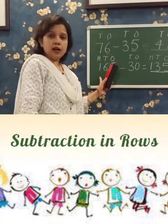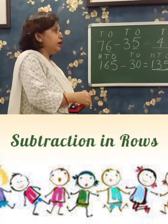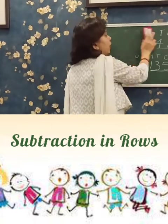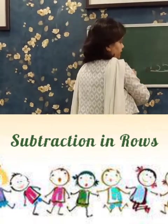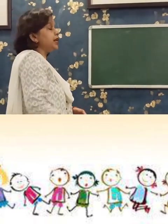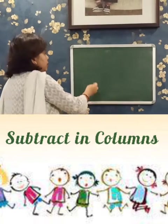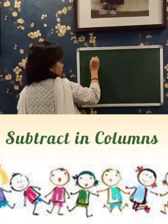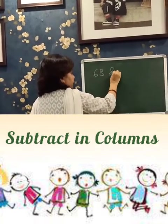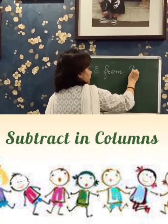Is it clear how to subtract in rows? Now let us learn how to subtract in columns. Columns means vertically, in a standing manner. Suppose we have to subtract 68 from 96.